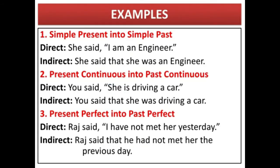Now, examples for better understanding. Rule one — simple present changes to simple past: 'She said, I am an engineer.' Indirect: 'She said that she was an engineer.' Rule two — present continuous changes to past continuous: 'You said, she is driving a car.' Indirect: 'You said that she was driving a car.' Rule three — present perfect changes to past perfect: 'Raj said he has not met her yesterday.' Indirect: 'Raj said that he had not met her the previous day.'